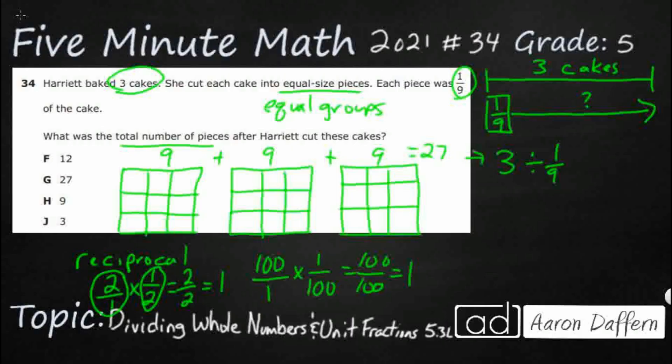What we know is that dividing by a number is the same as multiplying by its reciprocal. Dividing by a number is the same as multiplying by its reciprocal. So instead of dividing by one-ninth, what if we multiplied by its reciprocal? We're going to change this division into its inverse operation — multiplication — and change this one-ninth into its reciprocal.